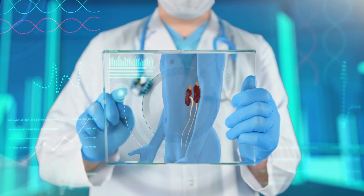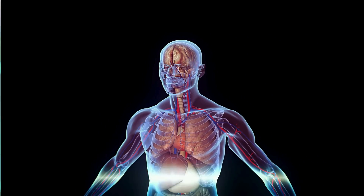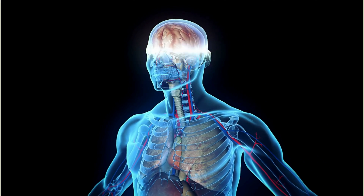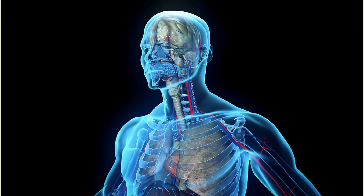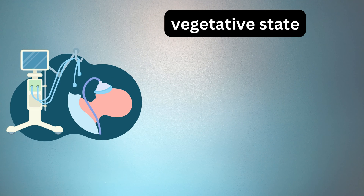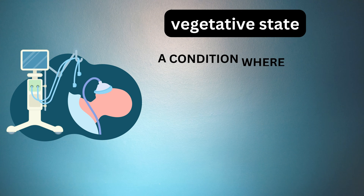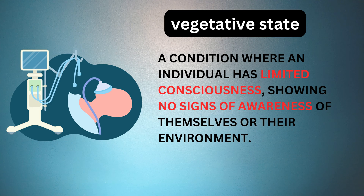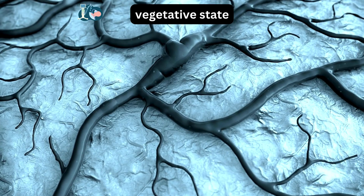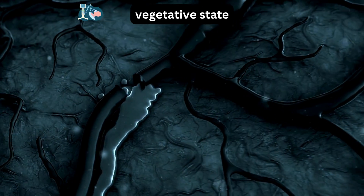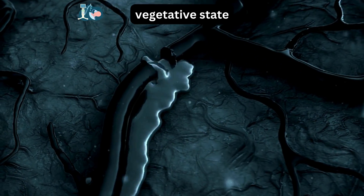Picture this: the brain, the most intricate supercomputer known to humanity, encountering a disruption that alters its symphony of signals and responses. The vegetative state is a condition where an individual has limited consciousness, showing no signs of awareness of themselves or their environment. It's often a consequence of severe brain damage, such as trauma or oxygen deprivation.